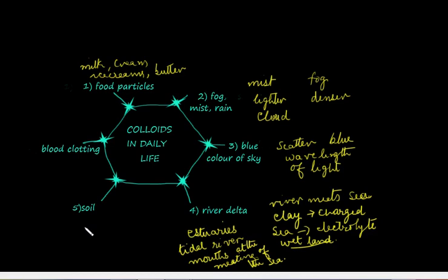Now, soil. Fertile soil is a colloid. The humus present in soil forms a protective colloidal layer over the fertile soil particles. And this colloidal nature helps soil to adsorb water and nutrients to it. This is what helps plants to get nutrients and water.